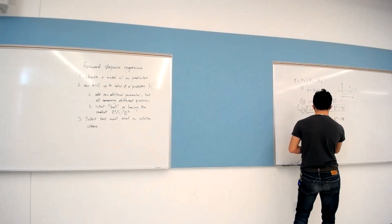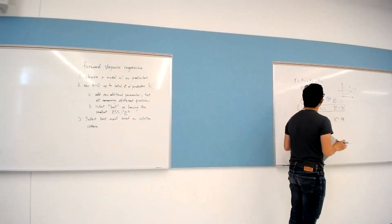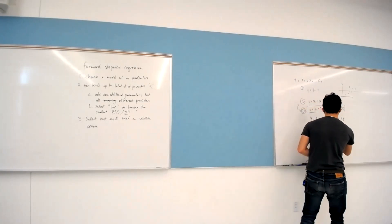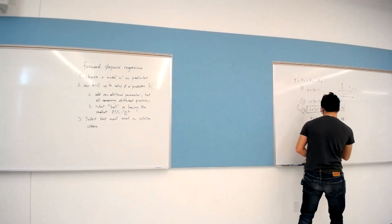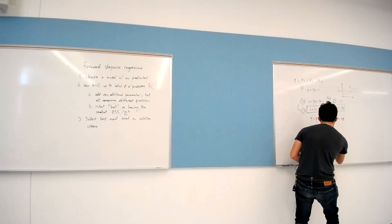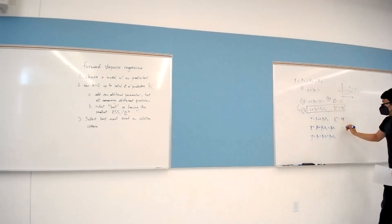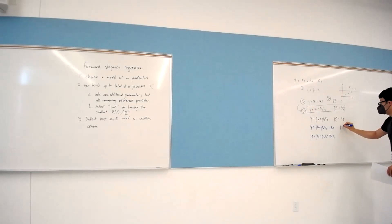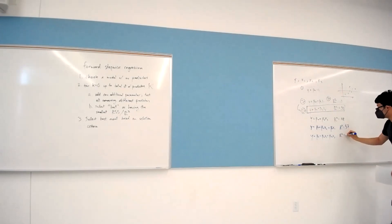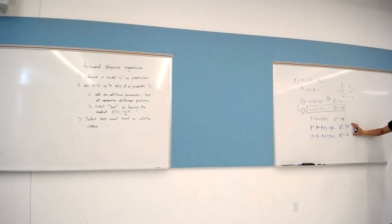So now I look at Y equals beta zero plus beta two X2 and all remaining variables. The two combinations are beta two X2 plus beta one X1, with R-squared equals 0.57, and beta zero plus beta two X2 plus beta three X3, with R-squared equals 0.6. Similar to the first step, I take the one with the highest R-squared and move on to iterate again back to the beginning of step two.